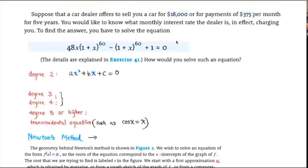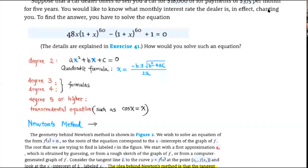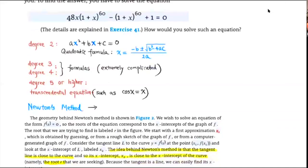Let's go over some facts that are already proven. When the equation is of degree 2 — a quadratic equation — we have a formula called the quadratic formula to solve it. For equations of degrees 3 or 4, we do have formulas to solve them, so that's good news. However, those formulas are extremely complicated and sometimes it might be even easier to solve it directly instead of using the formula.